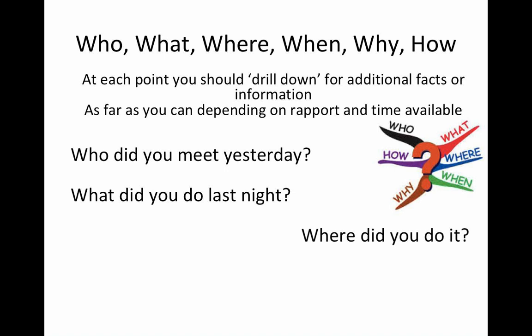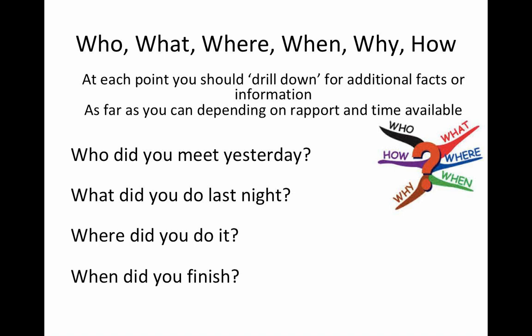Who did you meet yesterday? What did you do last night? Where did you do it? What restaurant did you go to? When did you finish? You're looking for specifics — an exact time as possible. They may say 'about 10 o'clock at night.' That's a good answer — most people don't check their watches at every point in their lives, so getting a firm 'about' is always good, unless time is a critical component of your information requirements.